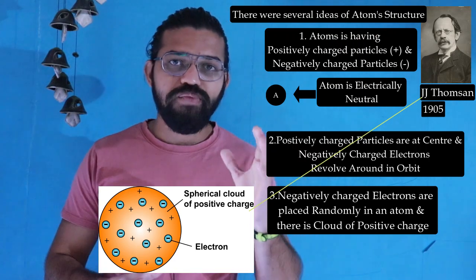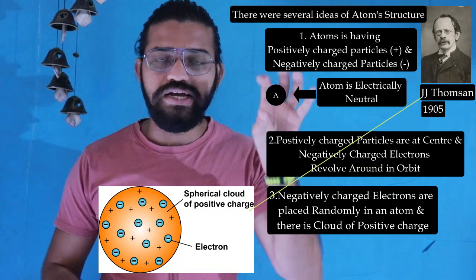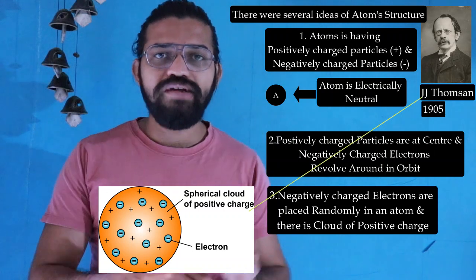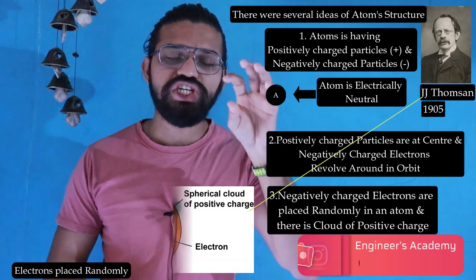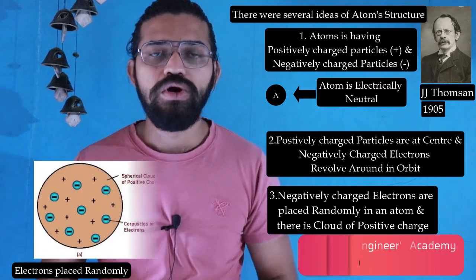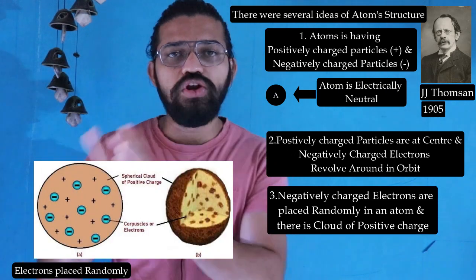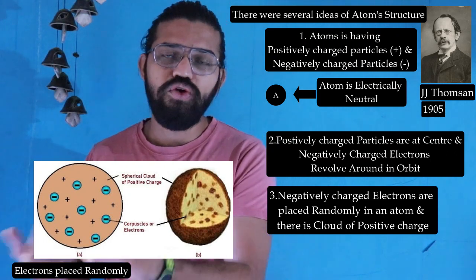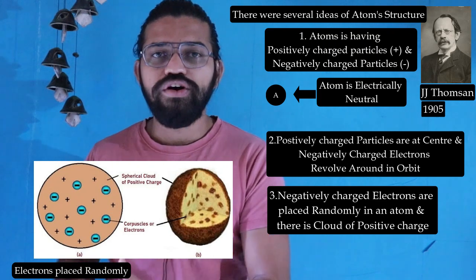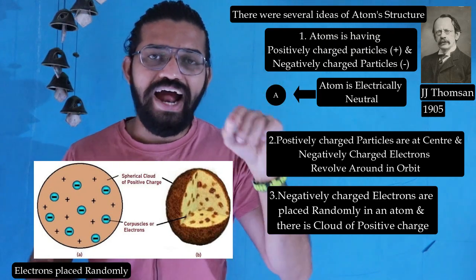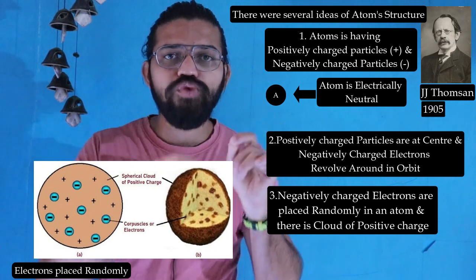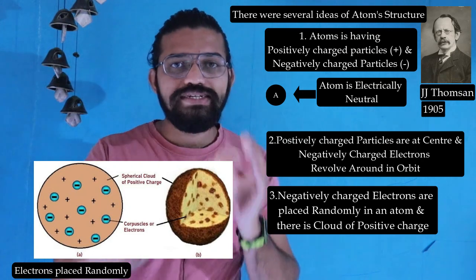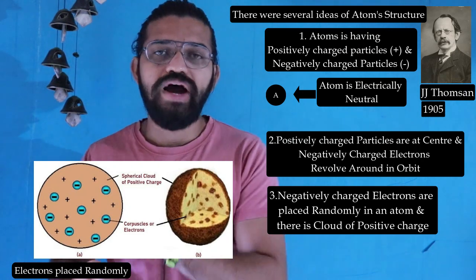The plum pudding model looks like this: we can see that the electrons are placed randomly as negatively charged particles, and there is a positive charge cloud present in the atom. This just looks like a plum pudding — the pudding represents the positive cloud of particles, and the small plums represent the negatively charged electrons.